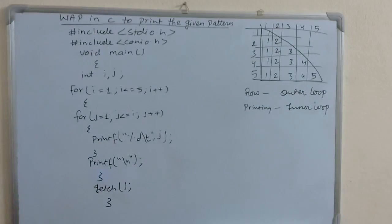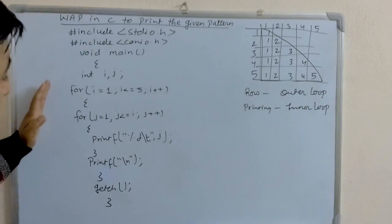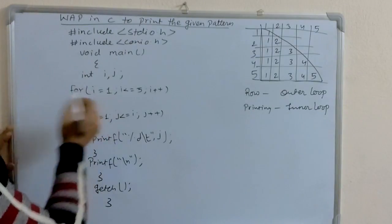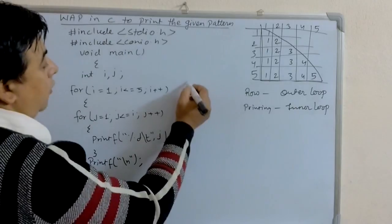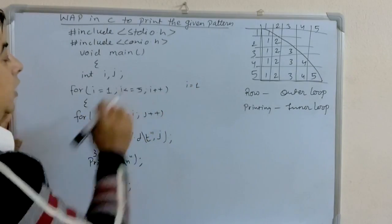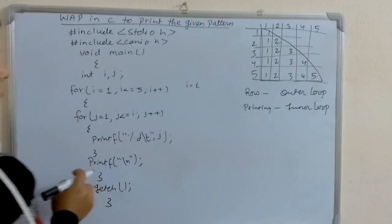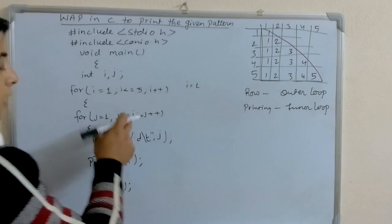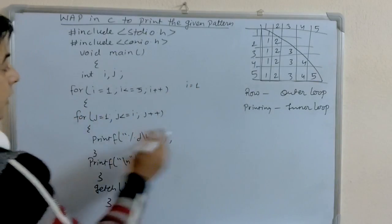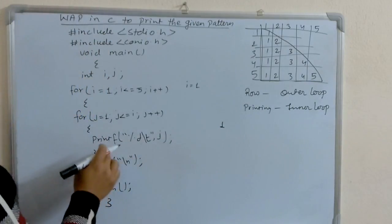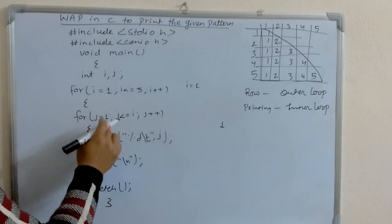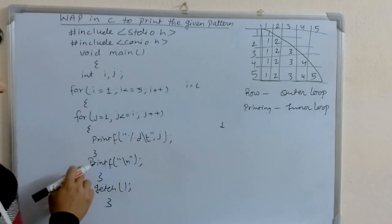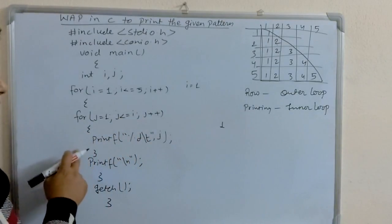When you compile and run the program, let's see how it runs. It starts: i = 1. i less than or equal to 5 is true, because the value of i is 1. It enters the inner loop. j = 1; j less than or equal to i, and i is also 1, so it is true. It prints j — which means it prints 1. Then the value of j increases to 2. j less than or equal to i — the value of i is 1, so it is false. It goes out from the inner loop.